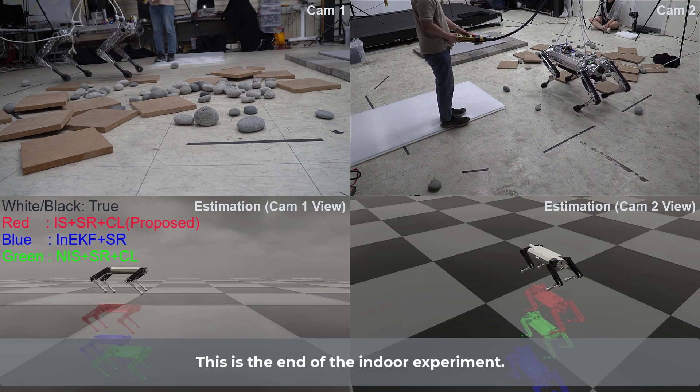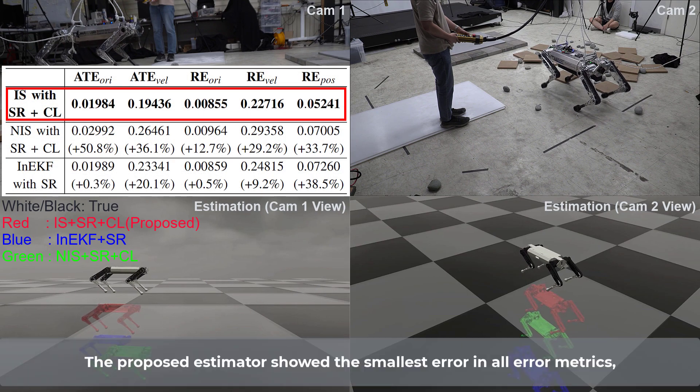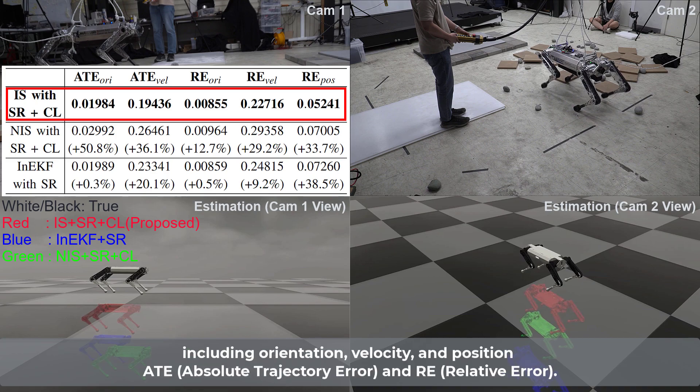The proposed estimator shows the smallest error in all error maps. This is the end of the indoor experiment. The proposed estimator showed the smallest error in all error metrics, including orientation, velocity, and position ATE and RE.